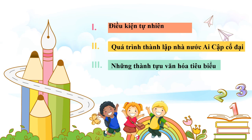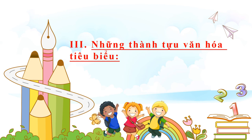Những thành tựu văn hóa tiêu biểu. Ở tiết trước, các bạn đã được tìm hiểu về điều kiện tự nhiên và quá trình thành lập của nhà nước Ai Cập cổ đại. Ai Cập cổ đại là một quốc gia được hình thành bên lưu vực của dòng sông Nile, và nhờ vào dòng sông Nile này đã giúp cho Ai Cập phát triển về mặt kinh tế. Đồng thời, dòng sông Nile cũng giúp cho người Ai Cập sáng tạo ra những thành tựu văn hóa rất tiêu biểu.